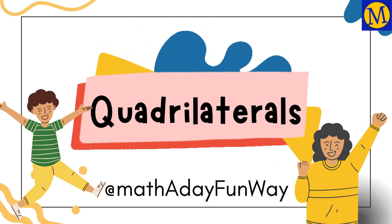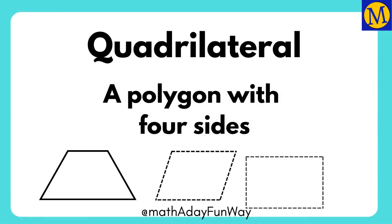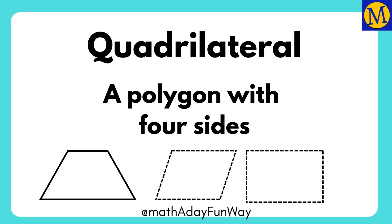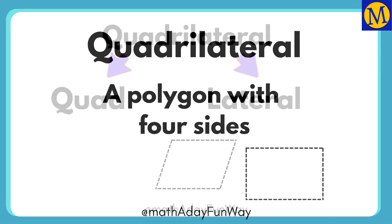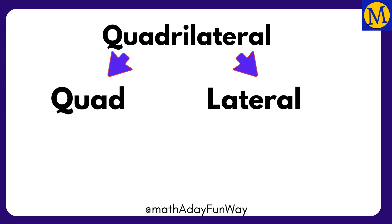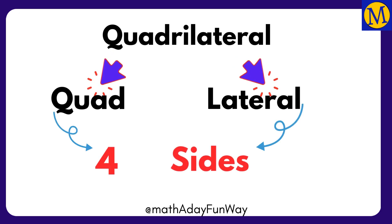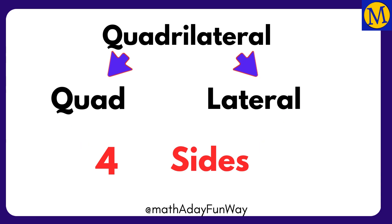Let's learn about quadrilaterals. A quadrilateral is a polygon with four sides. The word quadrilateral is made up of two words: quad and lateral. The word quad means four and lateral means sides.